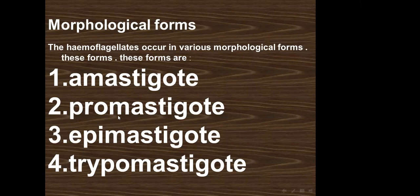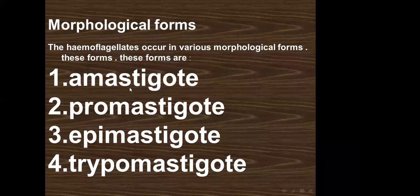Regarding nucleus location: in the amastigote it is posterior; in the trypomastigote, promastigote, and epimastigote it is in the center. Another criterion is the presence or absence of the undulating membrane — absent in the amastigote and promastigote, but present in the epimastigote and trypomastigote.